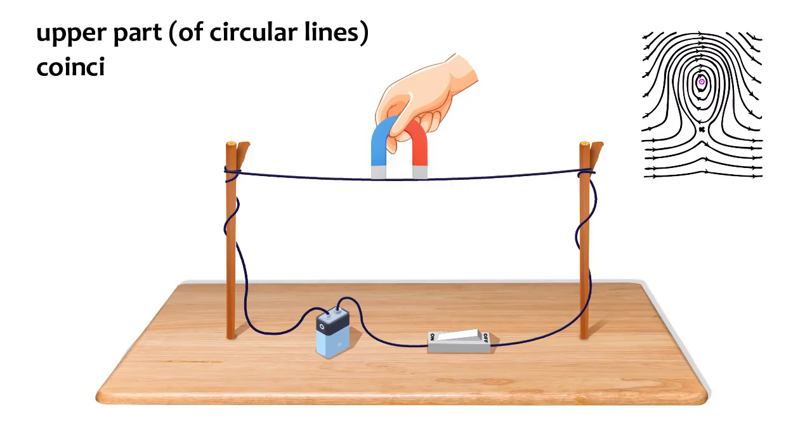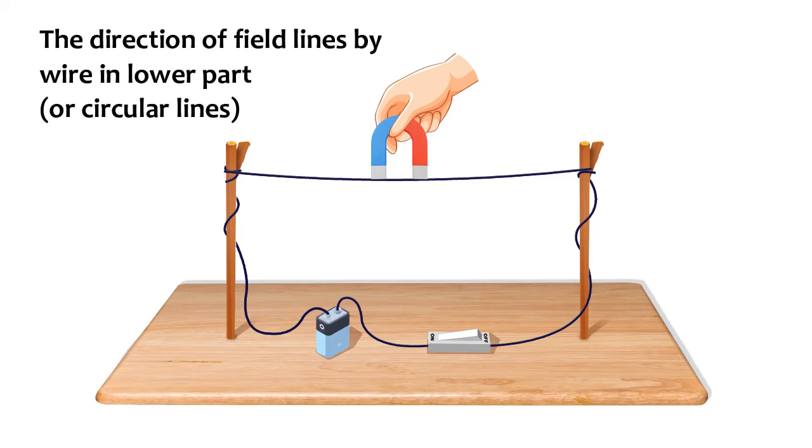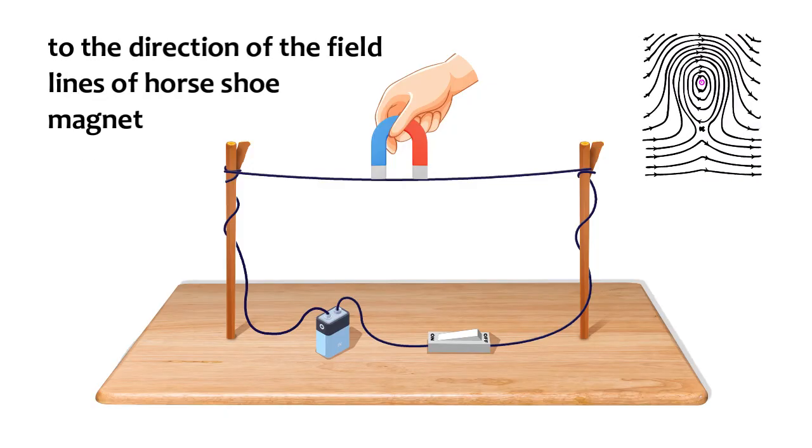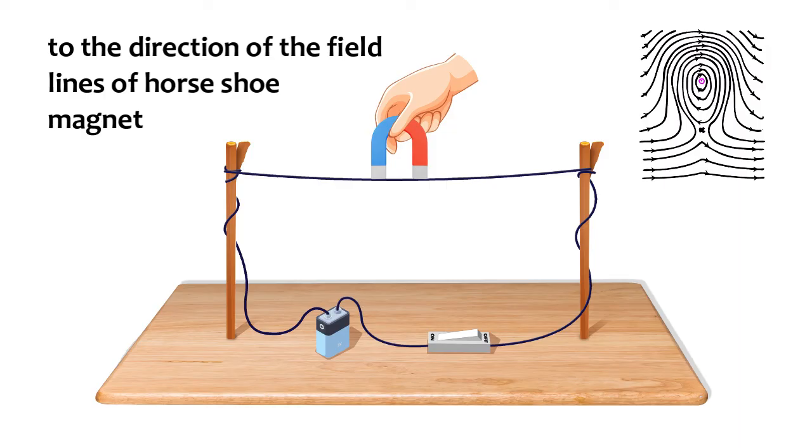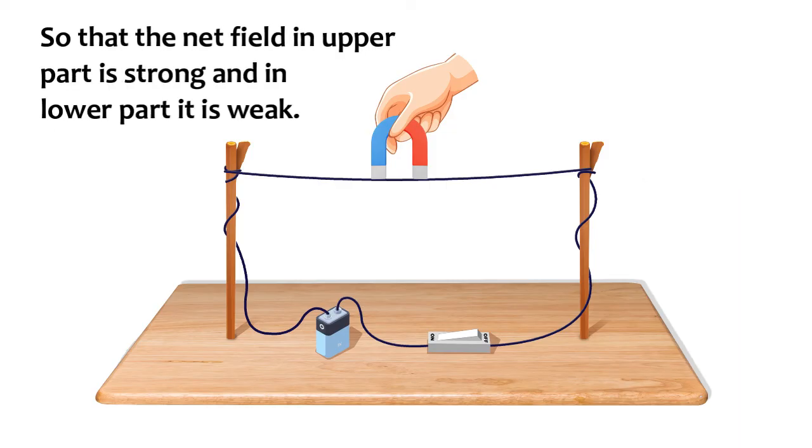We can see that the direction of the field lines due to the wire in the upper part of the circular lines coincides with the direction of the field lines from the horseshoe magnet. The direction of the field lines by the wire in the lower part is opposite to the direction of the field lines of the horseshoe magnet, so the net field in the upper part is strong and the lower part is weak.